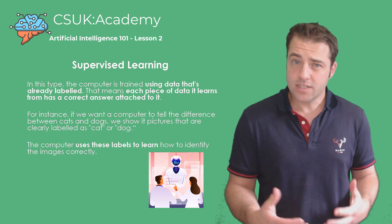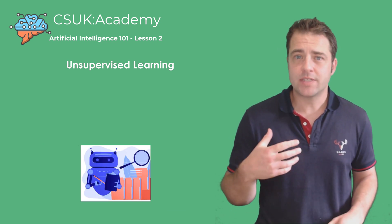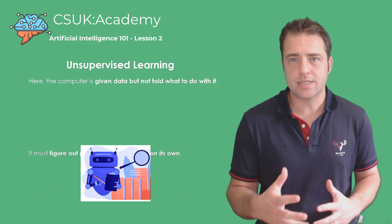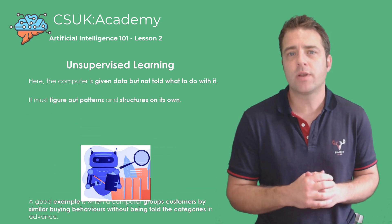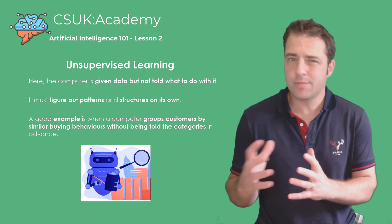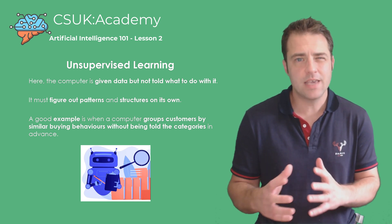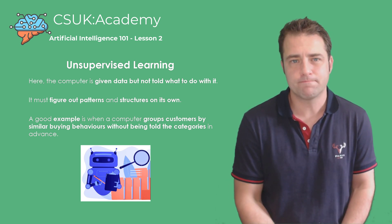With unsupervised learning, the computer is given data but not told what to do with it. It must figure out patterns and structures on its own. For example, it might group customers by similar buying behaviours without being given a predefined category.